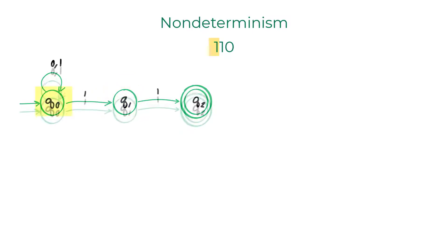You can think of this as a forking process, where the NFA creates a copy of itself and follows all the possibilities in parallel.